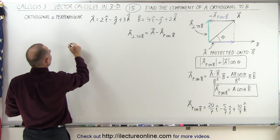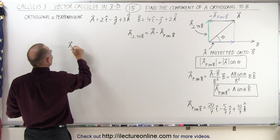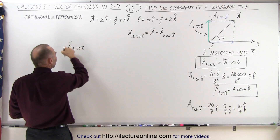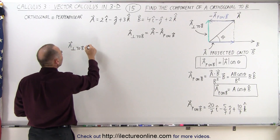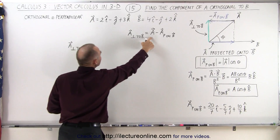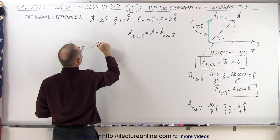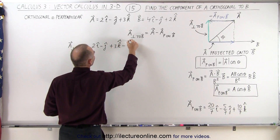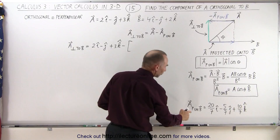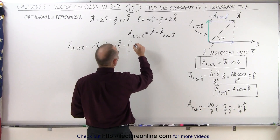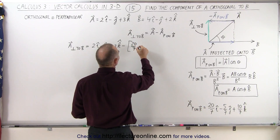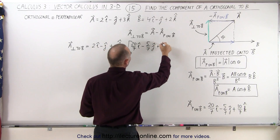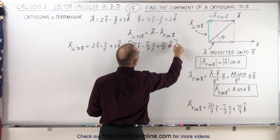Let's do that. So the component of A orthogonal or perpendicular to vector B is equal to A, which is 2I minus J plus 3K, and subtract from that the projection of A projected on vector B, which is 20 over 7 in the I direction, minus 5 over 7 in the J direction, plus 10 over 7 in the K direction.